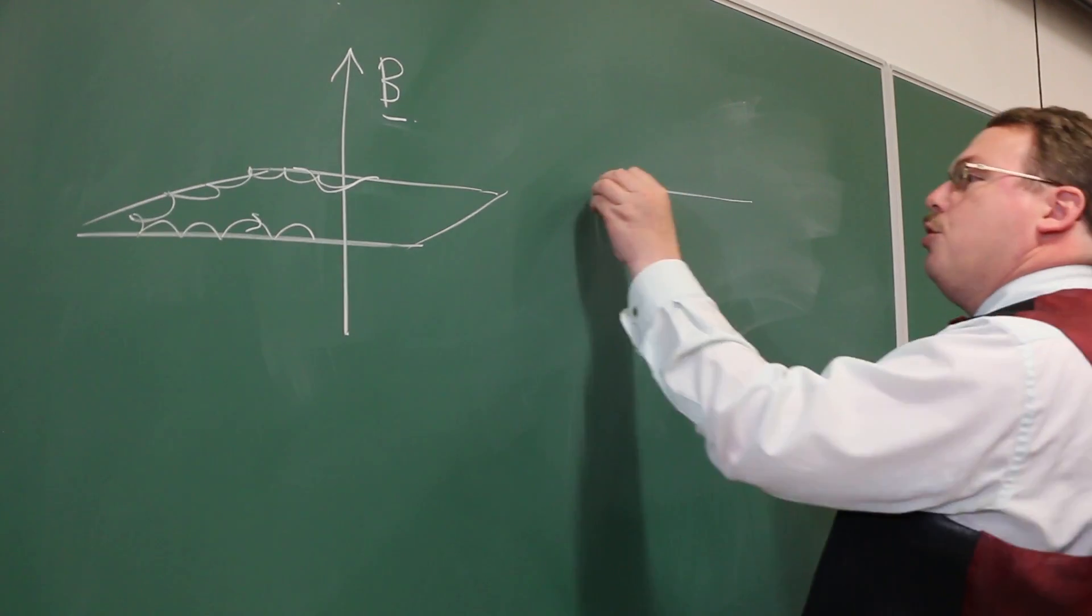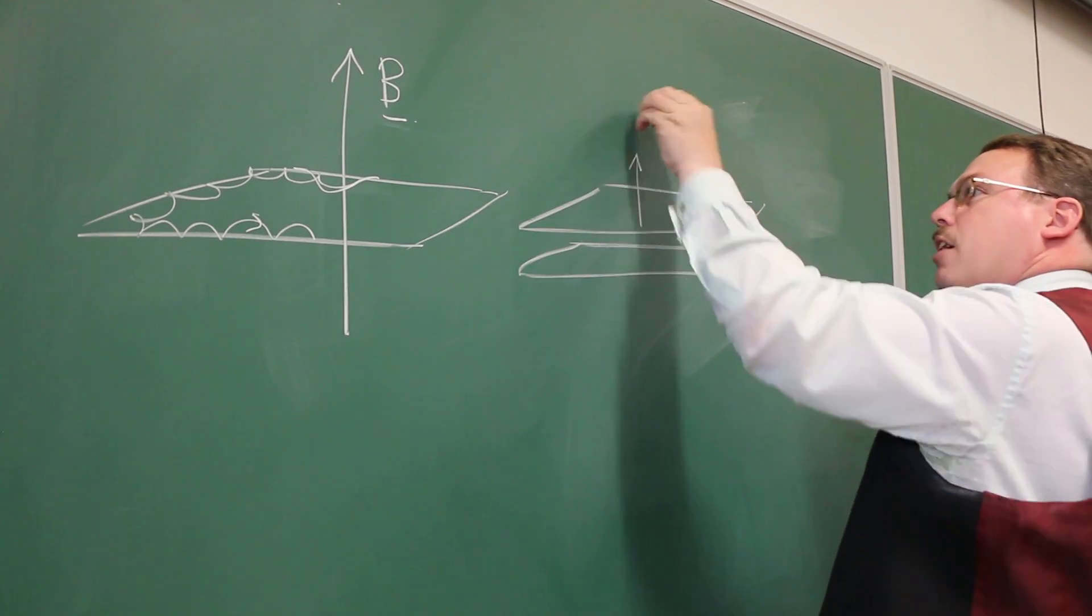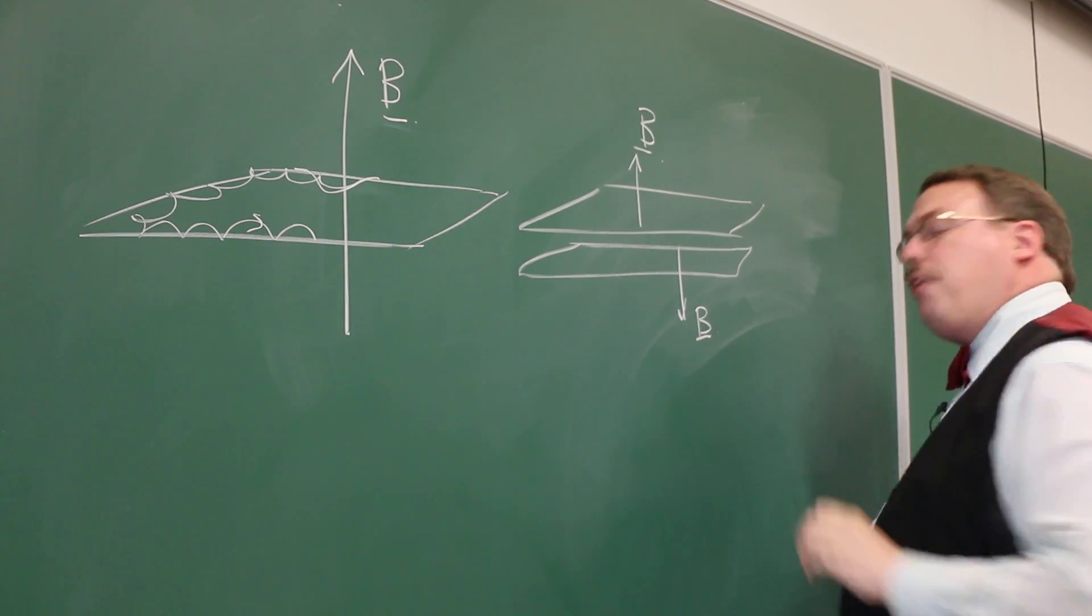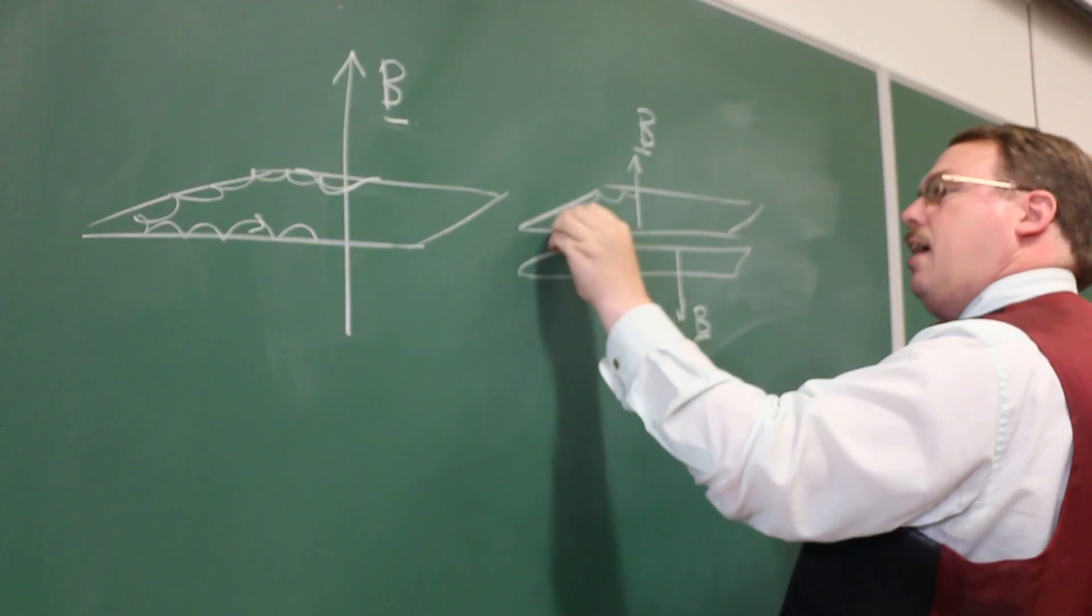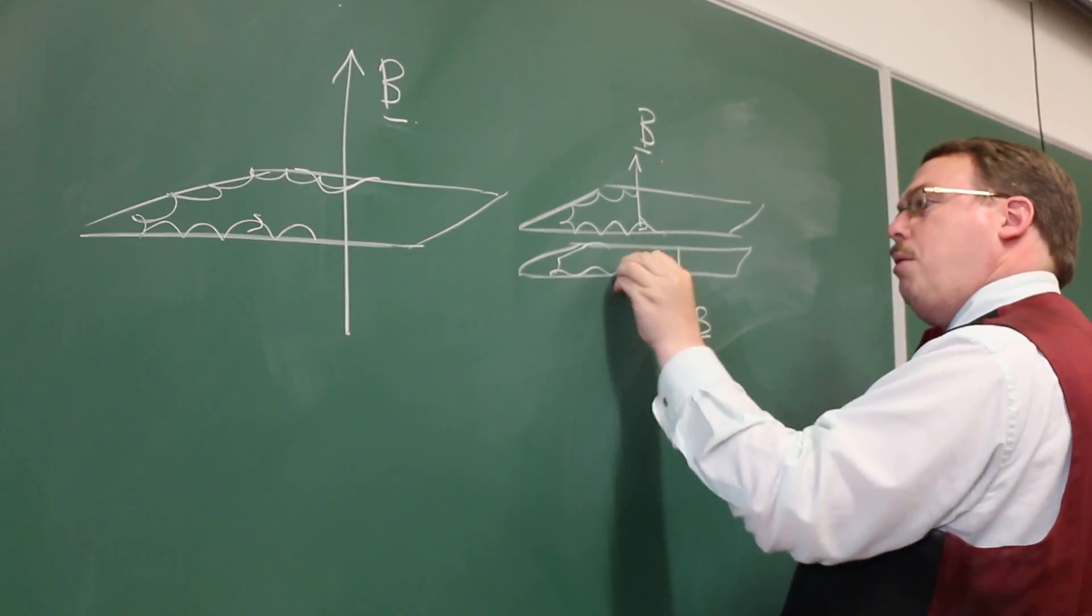Now imagine that I could take two of these films and put them right on top of each other, but with one of them experiencing a magnetic field pointing upwards and the other experiencing a field pointing downwards. Then I would have edge modes going one way in the upper film and the other way in the lower film.